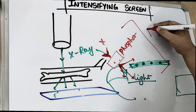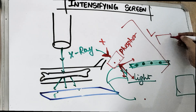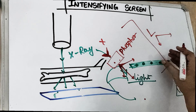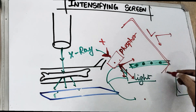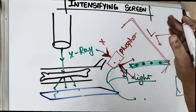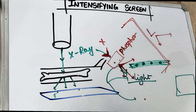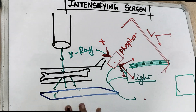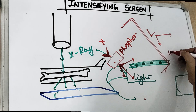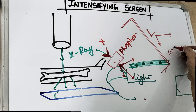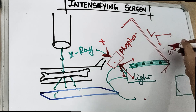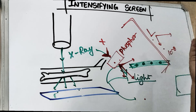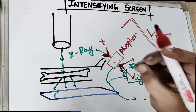Luminescence is categorized into two parts: fluorescence and phosphorescence. Fluorescence is when the conversion is very fast — when this conversion happens immediately, this is used for radiographic purposes. Phosphorescence is a little bit slower. There is a time limit somewhere around 10 to the power of minus 8. If the conversion time is less than that, it is fluorescence; if it is more, it is phosphorescence. But the lag time is very small.